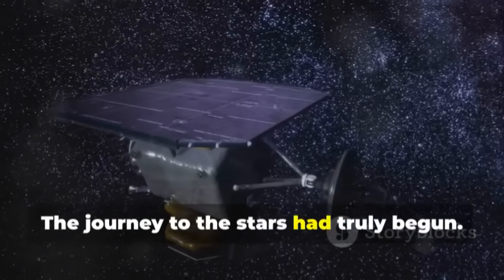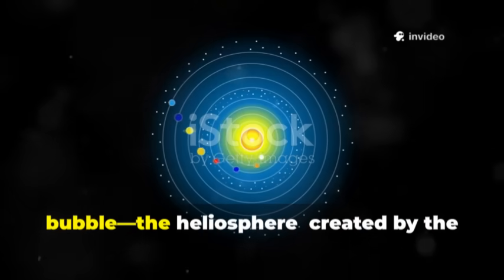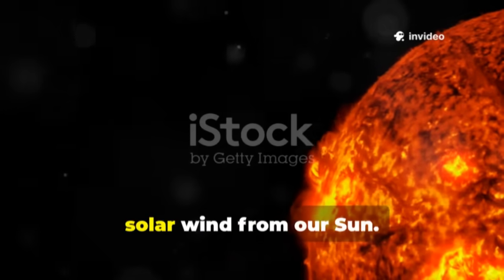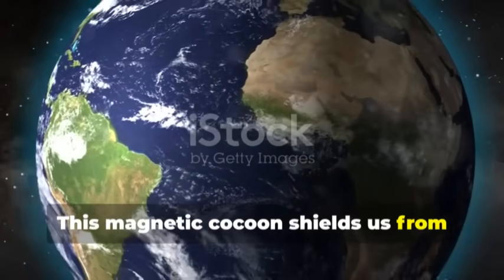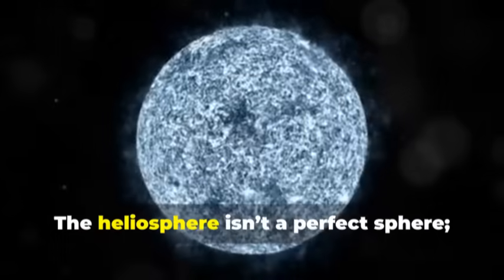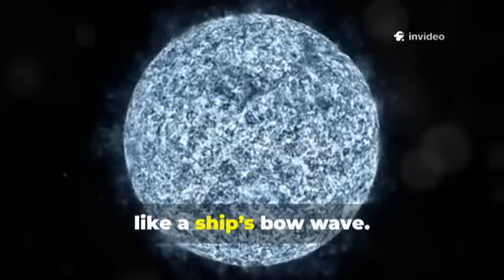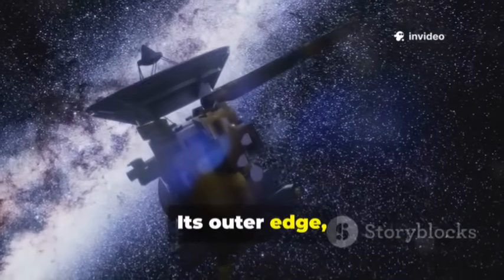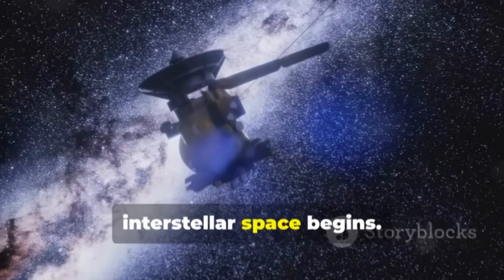Our solar system is wrapped in a vast bubble, the heliosphere, created by the solar wind from our sun. This magnetic cocoon shields us from dangerous cosmic rays, making life on Earth possible. The heliosphere isn't a perfect sphere. It's shaped by the interstellar medium like a ship's bow wave. Its outer edge, the heliopause, marks where the sun's influence ends and interstellar space begins.